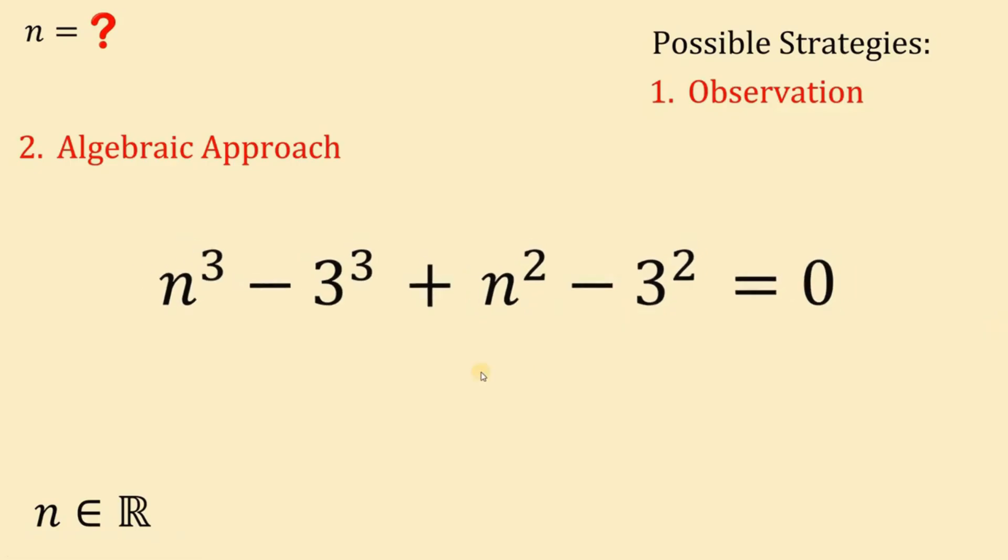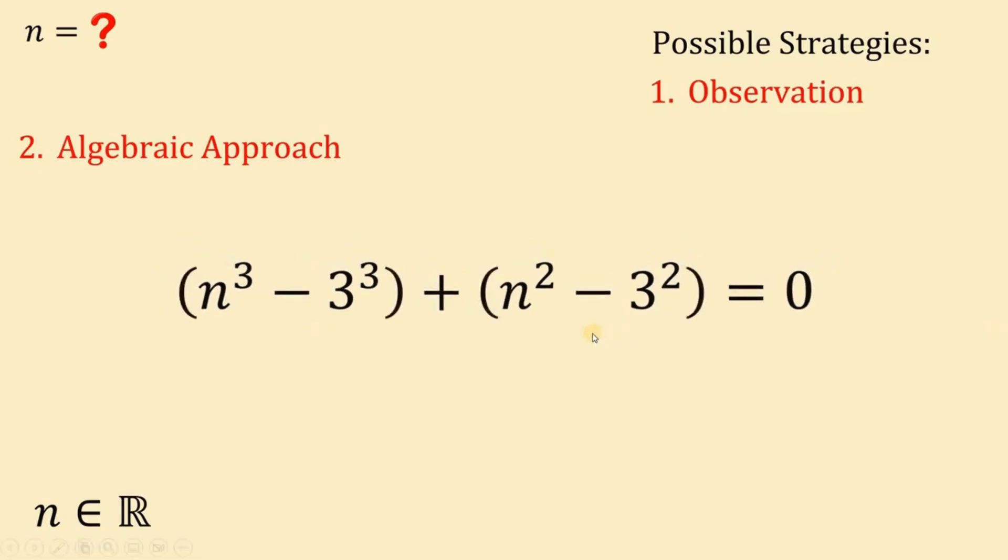From here, if we group this, notice that we can now use the property, the identity a cubed minus b cubed or the difference of 2 cubes. If we have a cubed minus b cubed, it is equivalent to a minus b multiplied by a squared plus ab plus b squared. And also, we see difference of 2 squares. If we have a squared minus b squared, it is equivalent to a minus b multiplied by a plus b. Therefore, we can factor these two terms.